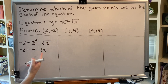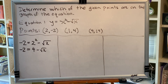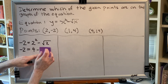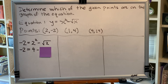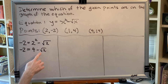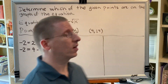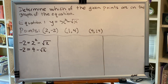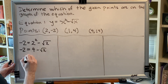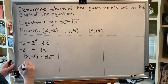We need to decide if the left side and the right side are equal. Covering up the square root of 2, what number would make this true? It would have to be 6, since 4 minus 6 is negative 2. But the square root of 2 is not equal to 6 — the square root of 36 equals 6. These are not equal, so the point (2, -2) is not on the graph.